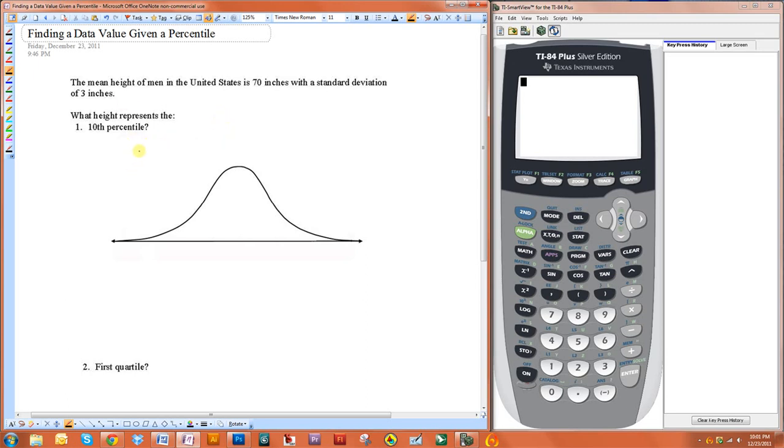We want to find what height is represented by the 10th percentile. Essentially what we have to do is take the percentile—excuse my handwriting, it looks terrible—and then convert that to a z-score and then convert that to an x-value.